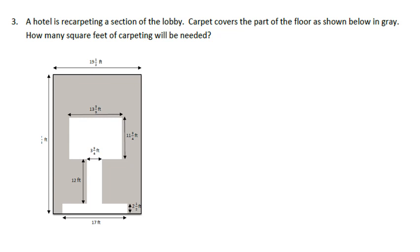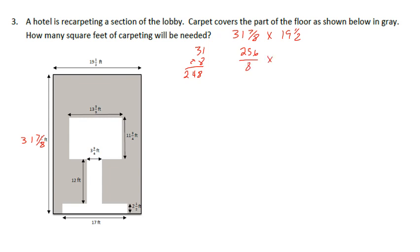We want to find the total area of the gray region. We're going to find the area of the individual white rectangles and subtract them. One missing parameter on the side is 31 and 7 eighths. To find the total gray area, I have 31 and 7 eighths times 19 and 1 half. Converting: 31 times 8 is 248, plus 7 is 255 eighths — let me verify: 31 times 8 is 248 plus 7 eighths gives 255 eighths. Wait, recomputing: 248 plus 7 is 255 — actually the speaker gets 256 eighths. And 19 and 1 half is 39 halves.